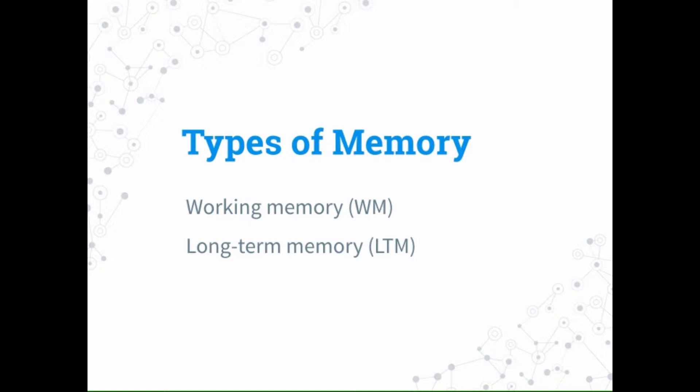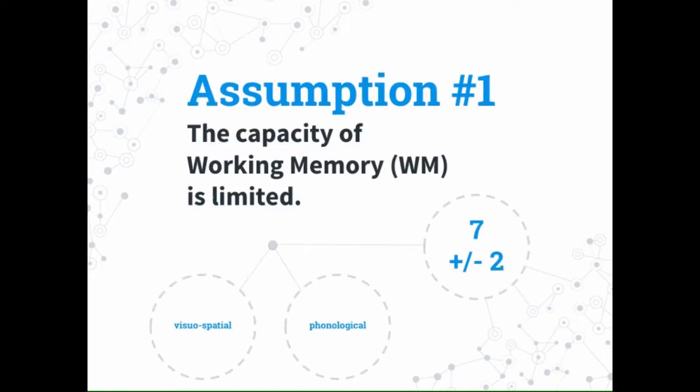Cognitive load theory has a few assumptions. One assumption is that the capacity of working memory is limited. George Miller's information processing theory, which Sweller based a lot of this on, states that our memory span can handle seven plus or minus two chunks of information, and that it's easier to remember things if we organize those chunks.